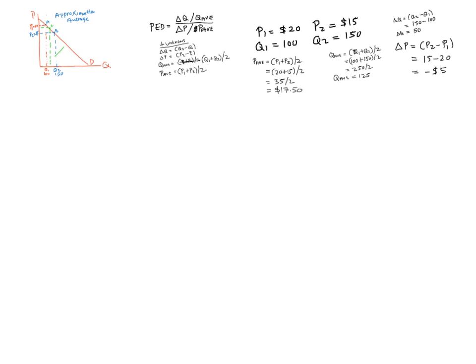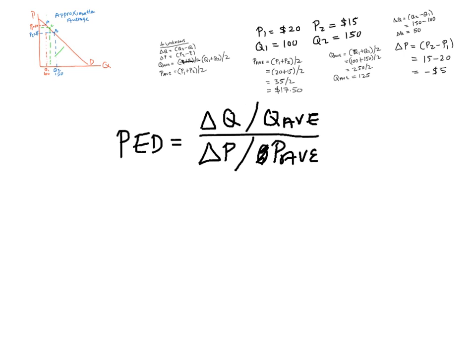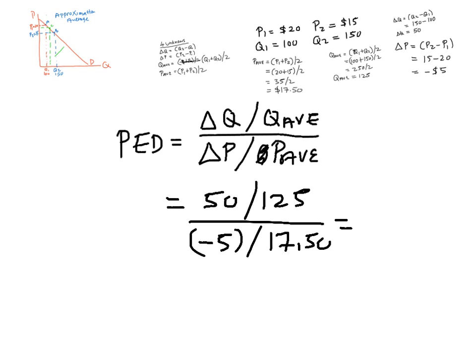So now we have the formula and we have our four unknowns. And so we can solve this. Change in Q, 50. Average Q, 125. Change in price, minus 5. Divided by average price, 17.50. I use the calculator and I got 0.4 divided by minus 0.29 to give me an answer of minus 1.38.